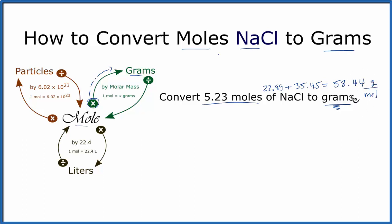So this is the molar mass for NaCl and it's also the conversion factor. So we start with moles, 5.23 moles of NaCl. We multiply by the molar mass, 58.44 grams per mole.